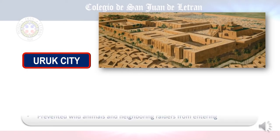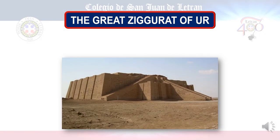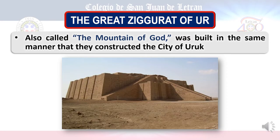Next is Uruk City, which was the first true city in the world. They built it using mud clay to protect themselves from harsh weather, wild animals, and invaders entering their territory. This was made to address the problem of safety and protection. The Great Ziggurat of Ur was built in a similar way and is also known as the Mountain of God, comparable to the churches we have today.